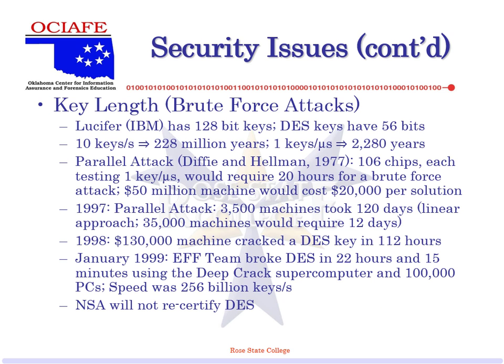How about the key length? Originally they had a 128-bit key, then they lowered it to 56. There's a big section in the book about how the NSA made them lower it so they could break it. Diffie-Hellman estimated that with 10^6 chips each testing one key per millisecond it would require 20 hours to brute force — a $50 million machine would cost $20,000 per solution. In 1998 a $130,000 machine could crack it in 112 hours.